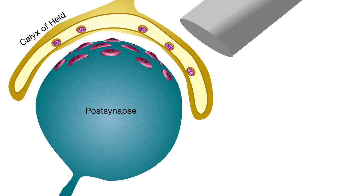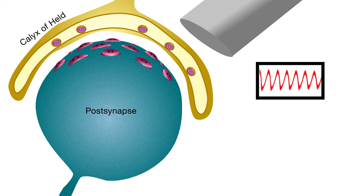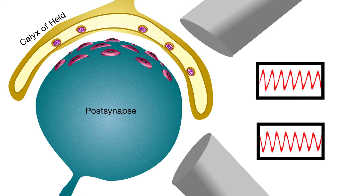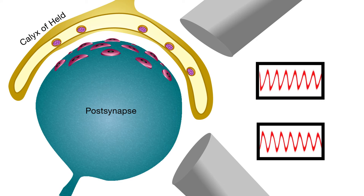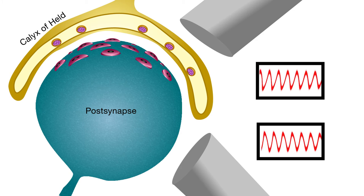They then used tiny microelectrodes to record electrical activity from both the calyx itself and the post-synaptic cells that the calyx communicates with in mouse brain slices to determine how synaptic communication was affected by the specific loss of GITs in the pre-synapse.